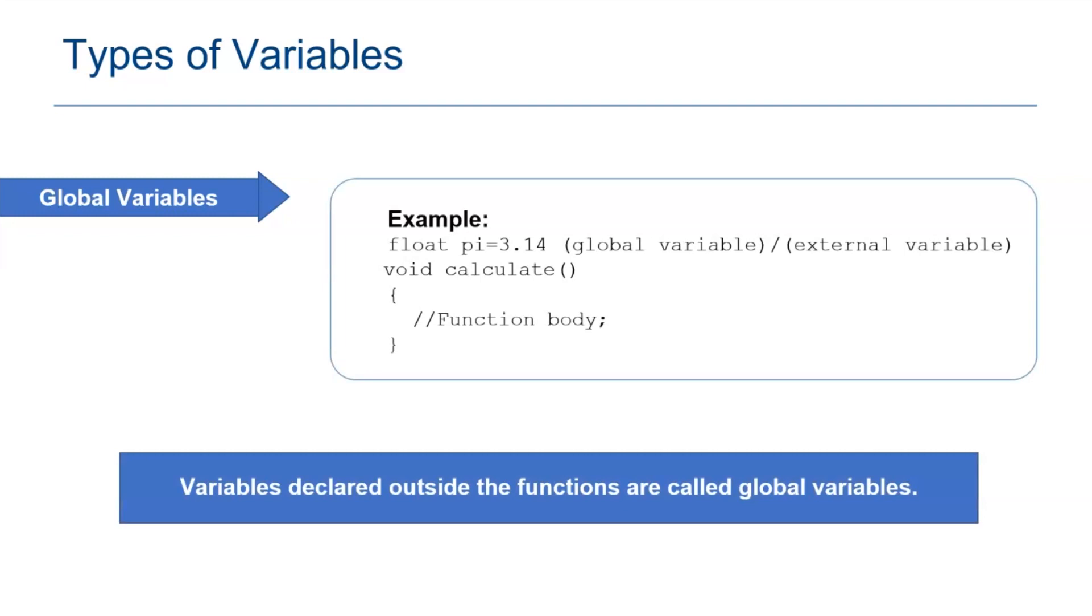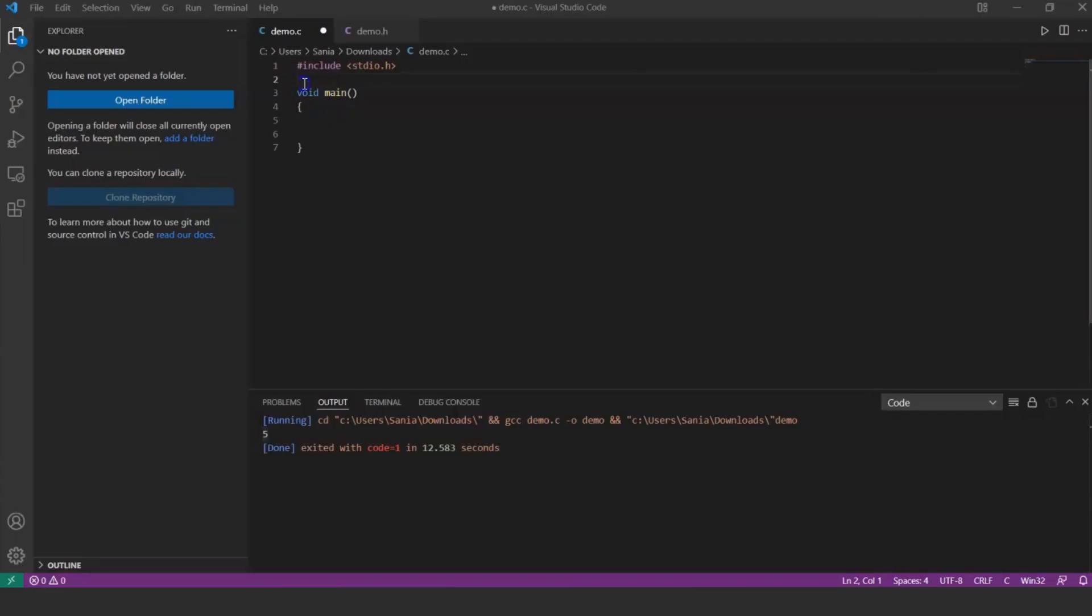Let's move on to the next type of variable. Variables declared outside the functions are called global variables. Here is the example where float pi equals 3.14, a global variable defined outside the functions. Let's try to execute the program using global variables.